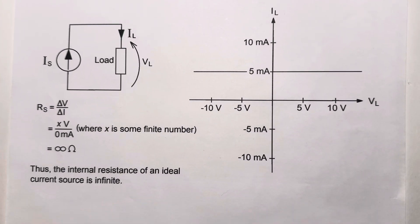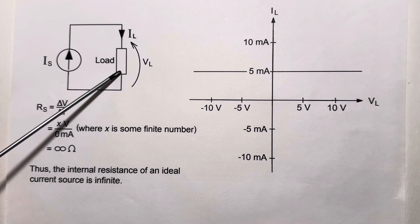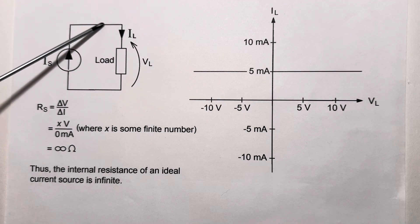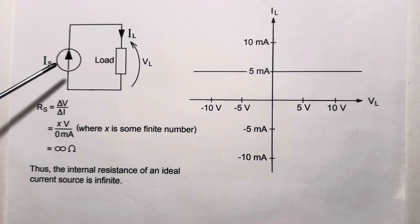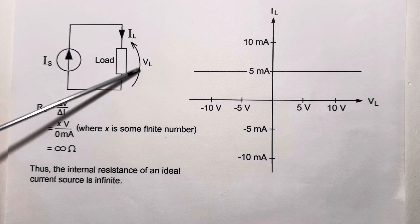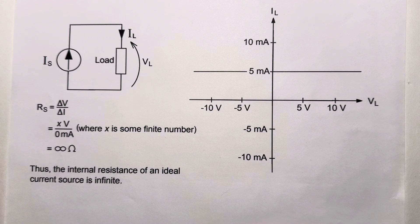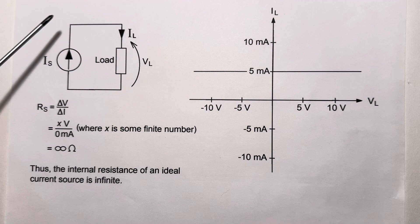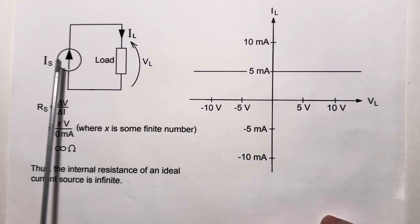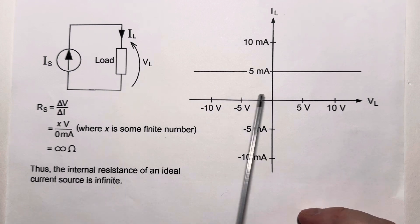Now, let's look at a current source. Here we have an ideal current source connected to a load. Now, the source forces I sub S and I sub L. Well, they're the same because it's in series, but I sub L equals IS and the voltage across the load will be whatever is necessary to maintain five milliamps. I'm just picking five milliamps arbitrarily here. It could be anything, but let's say that this source does source five milliamps.